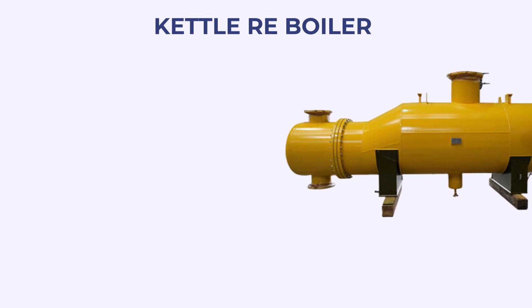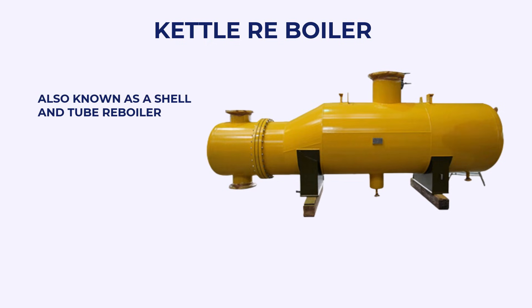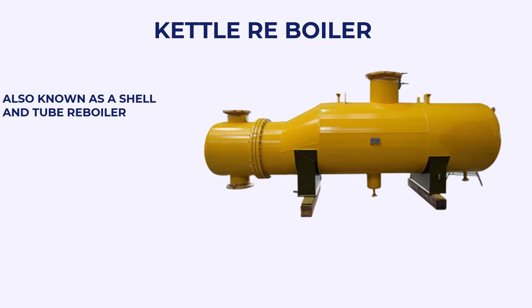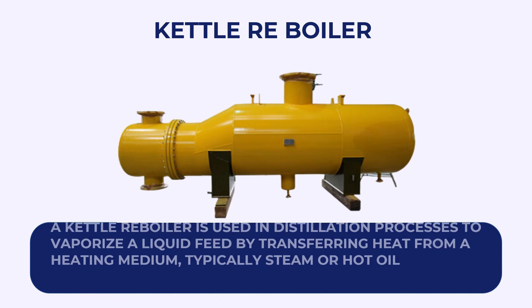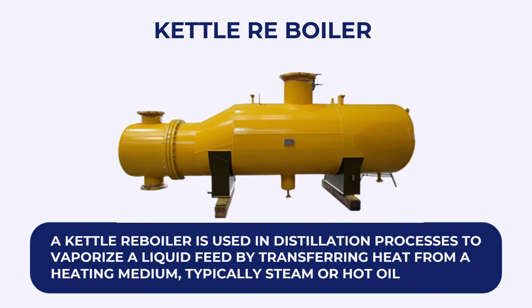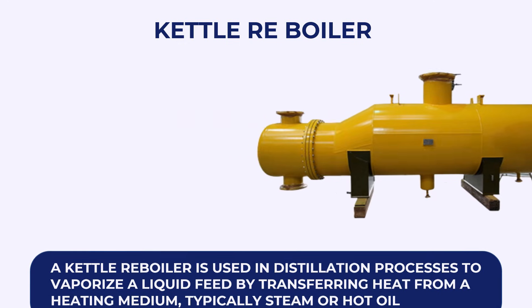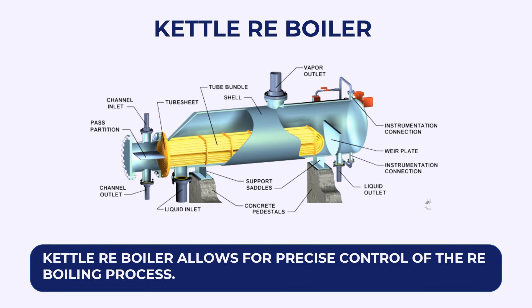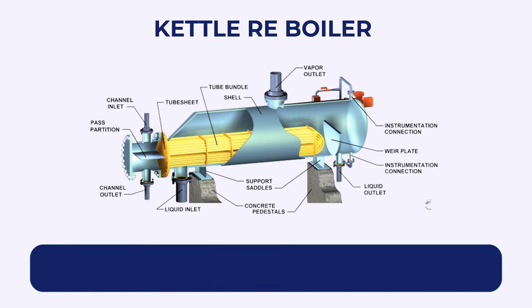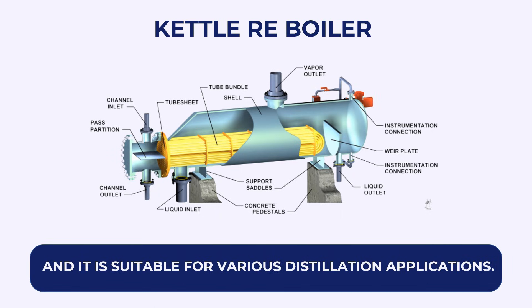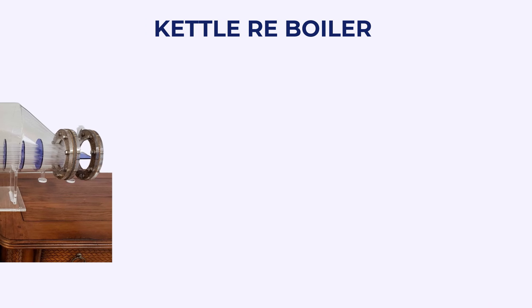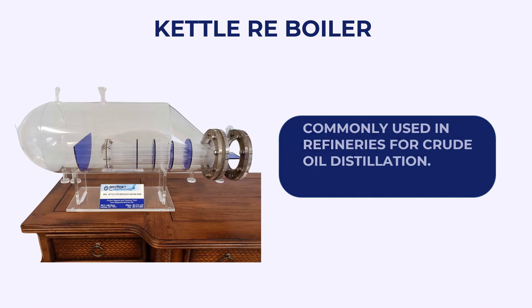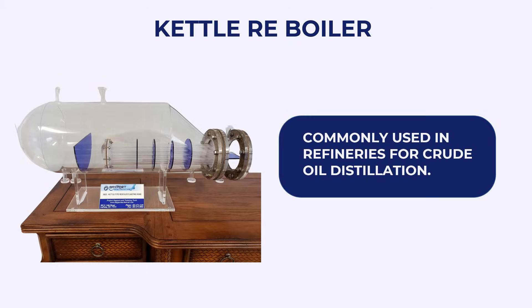Kettle Reboiler. A kettle reboiler, also known as a shell and tube reboiler, is a type of heat exchanger used in distillation processes to vaporize a liquid feed by transferring heat from a heating medium, typically steam or hot oil. It allows for precise control of the reboiling process and is suitable for various distillation applications. It is commonly used in refineries for crude oil distillation.